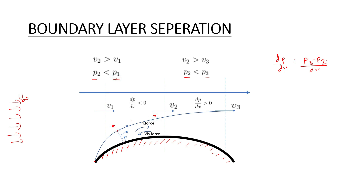Adverse pressure. Pressure force favorable. Pressure is favorable when dp by dx is less than zero, because P1 here and P2 here — P1 is greater than P2. In section 2, the velocity profile changes and here P2 is greater than P1.